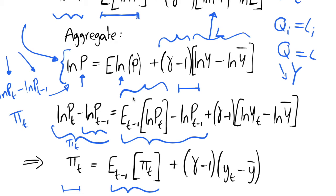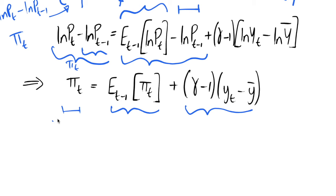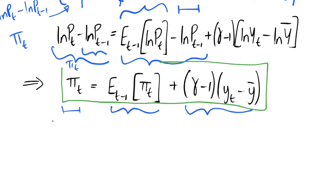The firm knows the current price level but must form an expectation about the inflation rate in period t. At the end of the equation we rewrite the natural logarithm of output as lowercase y — a notational convention where lowercase letters denote the natural logarithm of that variable. This equation, which I've surrounded with doodles, is our expectations augmented Phillips curve.